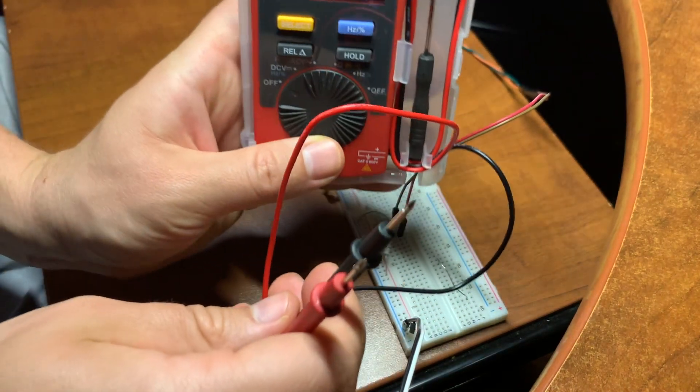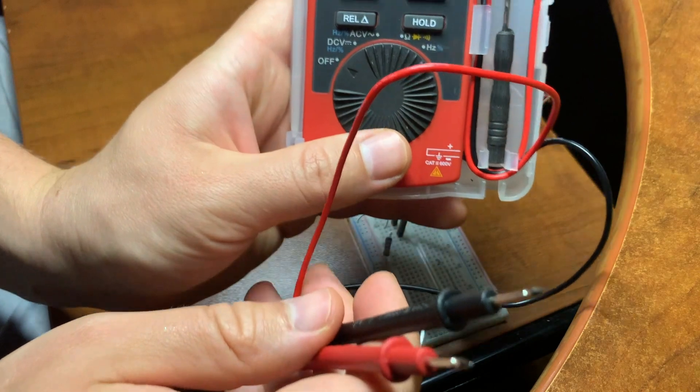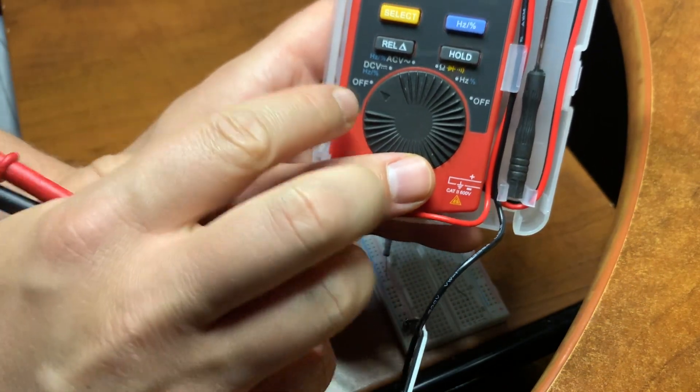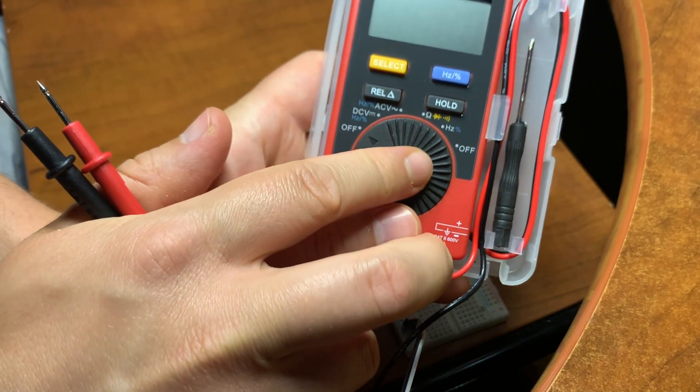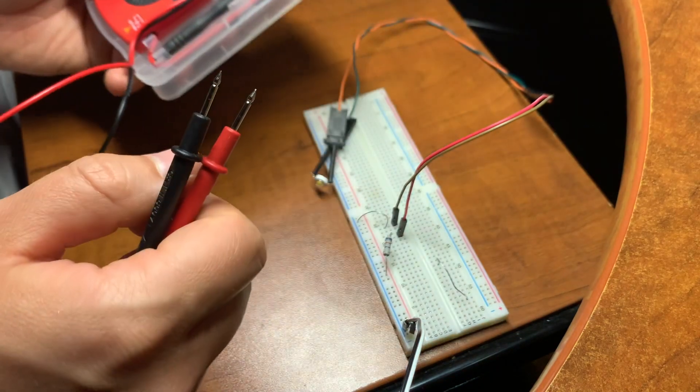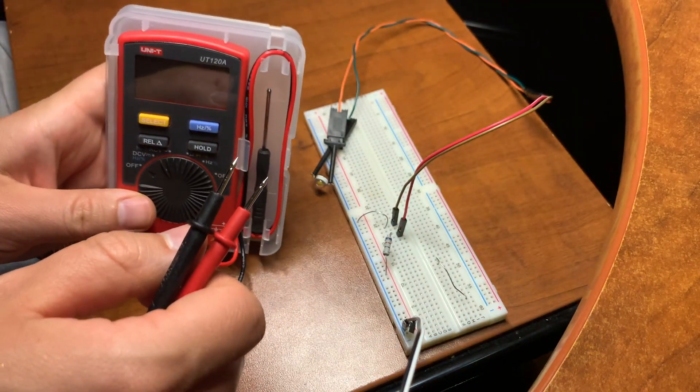This is the multimeter I'll be using. You can measure AC-DC voltage, resistance, and some basic frequencies. So it doesn't have any amperage measurement capabilities.